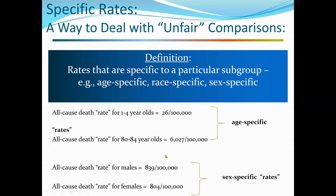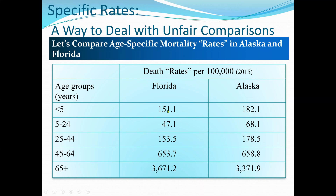The age-specific death rates per 100,000 are calculated by dividing the number of deaths in each age group by the population in that group. For example, those under age 5 give us 151.1 per 100,000. Florida still shows higher overall rates, but examining specific age groups reveals that for those under age 5, more people died in Alaska than Florida, while in older age groups Florida has higher rates.